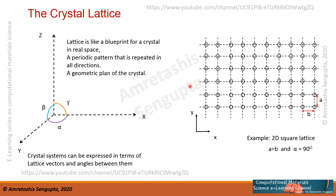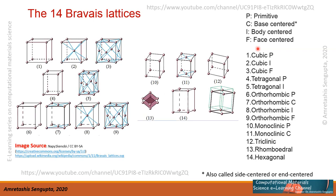Just like a builder has a blueprint for making a house, nature has put a blueprint for creating a crystal — where the atoms should be. These are basically geometric points not really associated with a physical entity to begin with, but that is the design of the crystal. A simple example: a 2D square lattice. In 2D it's easier to understand. The lattice parameters a and b are equal and the angle alpha between them is 90 degrees. These geometric points repeated in 2D space are the lattice points, and when some basis is associated with these points we get a crystal structure.